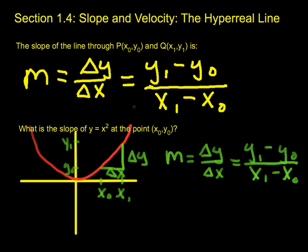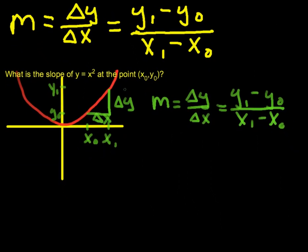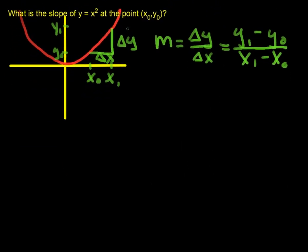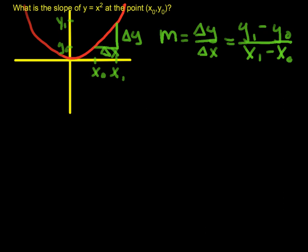As you go further along this parabola, the slope is very steep, whereas down at the bottom of the parabola the slope is practically zero. So we're not going to have a constant slope like we did with lines, but we can still talk about the slope at a point. Now let's work out the algebra. We've got x₀ already, and now let's describe x₁.